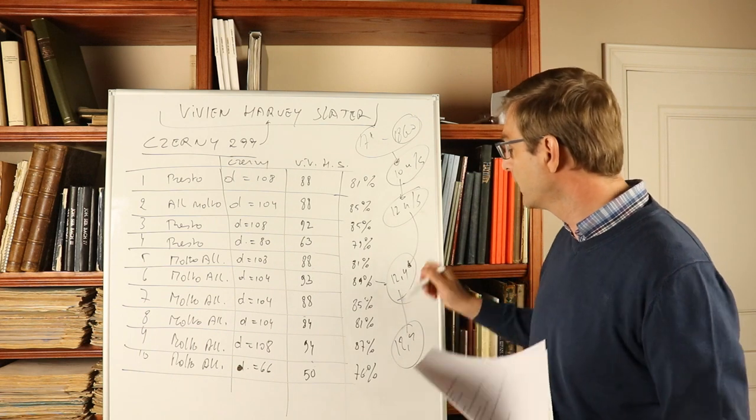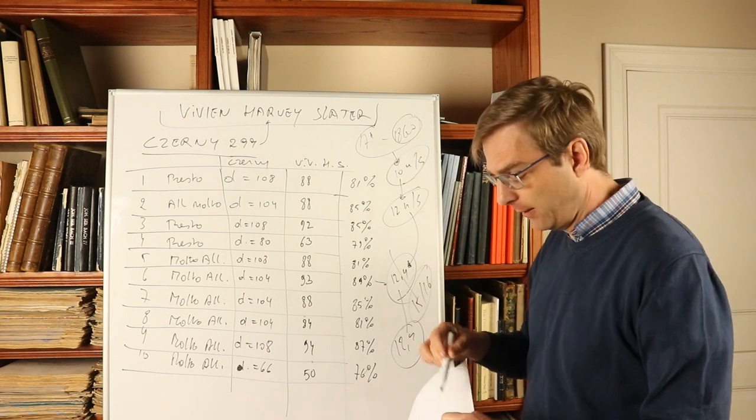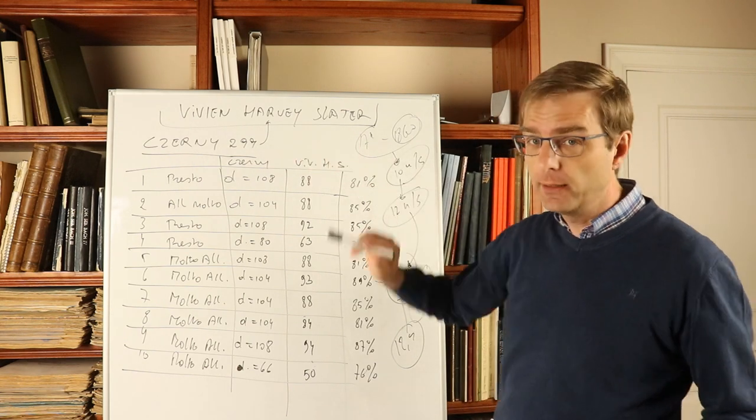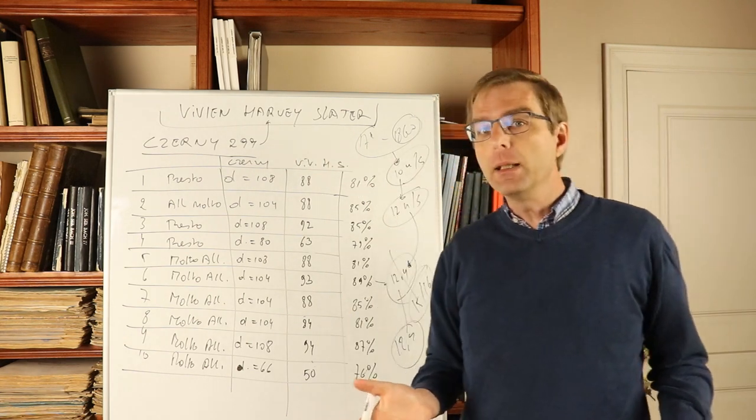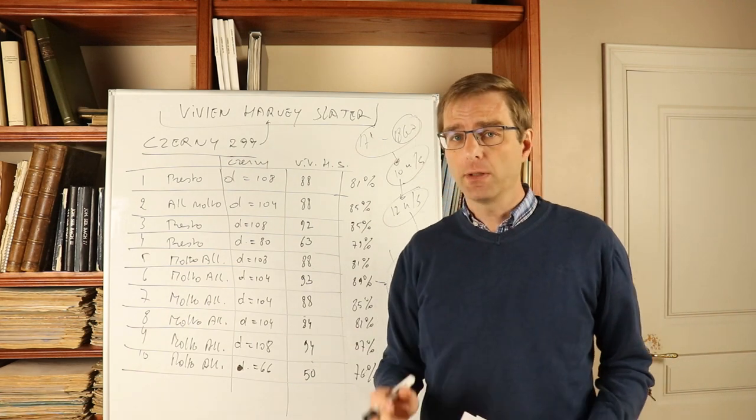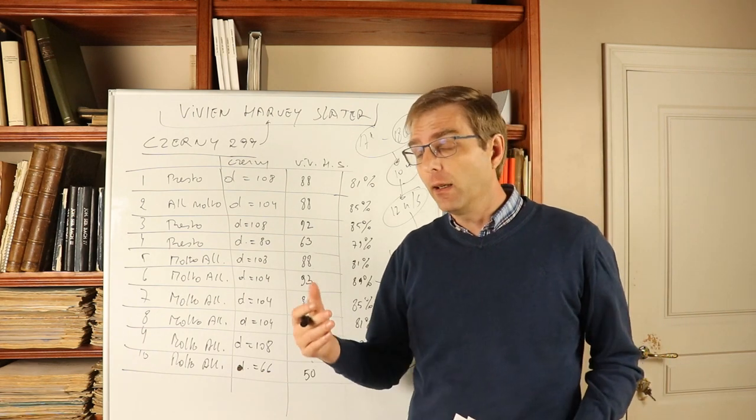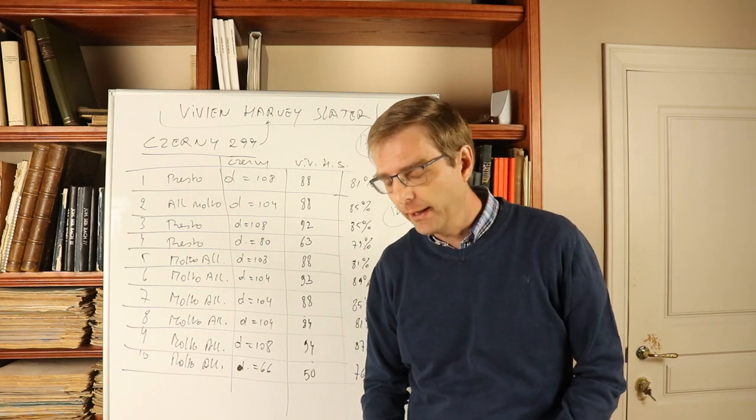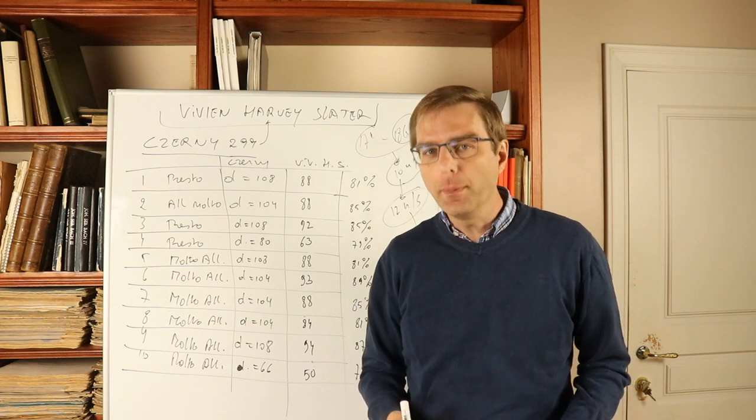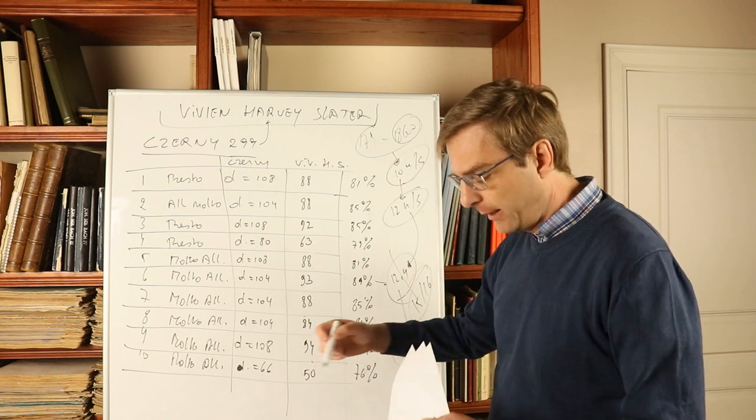You have to increase those speeds to 15 and 16 notes a second, which again in the Op. 299 is not the most extreme examples. If you go to the daily exercises and other exercises by Czerny, we reach 19 notes a second, and there are also etudes by Kalkbrenner and Herz. It's not an exception. The whole beat interpretation would obviously make this possible.